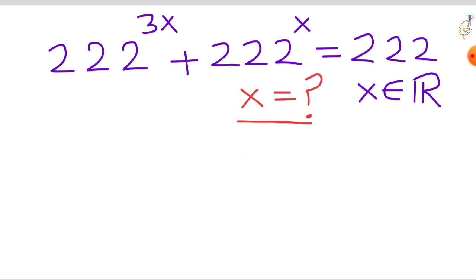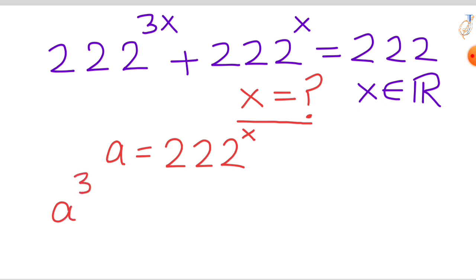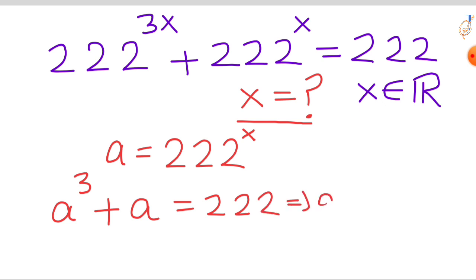Let's start by substituting a equal to 222 raised to the power of x. Then our equation turns into: a raised to the power of 3 plus a equals 222. We can rewrite this as a cubed plus a minus 222 equals 0.